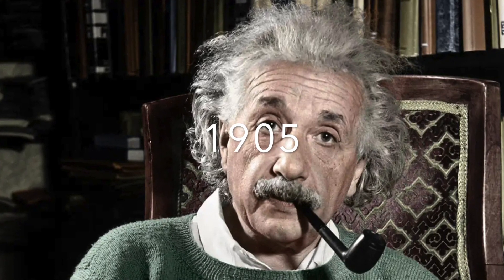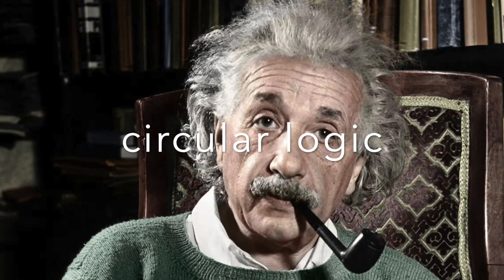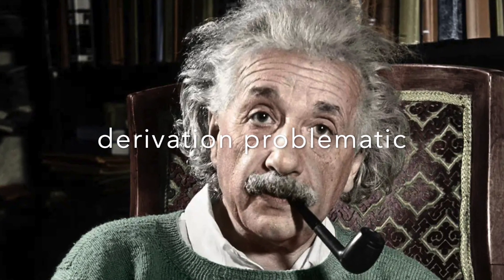The mass energy equivalence equation was first mentioned by Einstein in 1905 in one of his papers, in a slightly different form. It received criticism because of the use of circular logic. The equation itself is correct, as it has been proven countless times in many experiments. The problem lies with its derivation. After 1905, Einstein had spent a good 40 years to come up with many attempts to derive the equation, none of which he was really satisfied with.